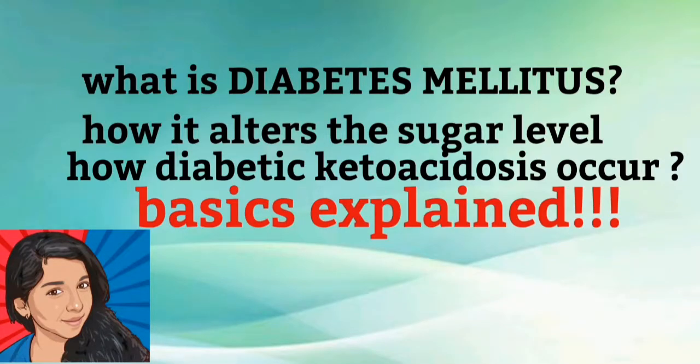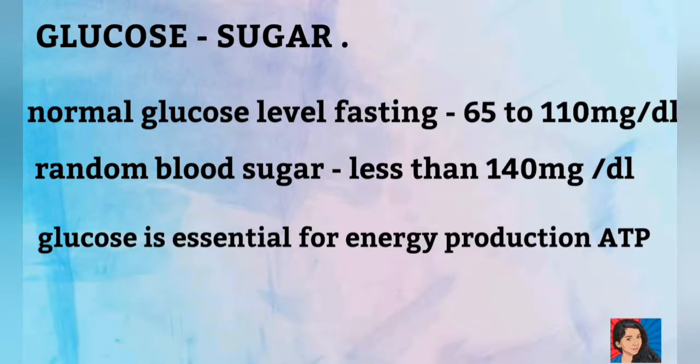Hello everyone, I'm going to explain the short and simple method in this video. Carbohydrate is a simple form of glucose. Glucose and sugar are one meaning. We use ATP. ATP is related to glucose, and glucose is essential for ATP.